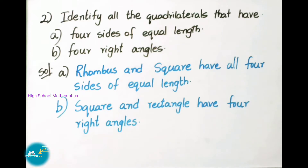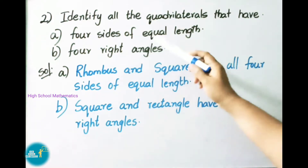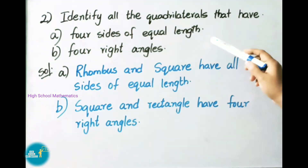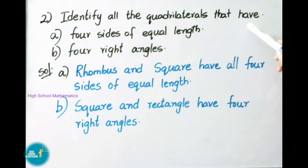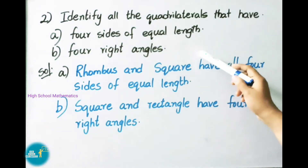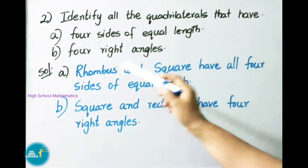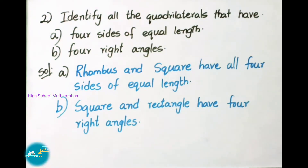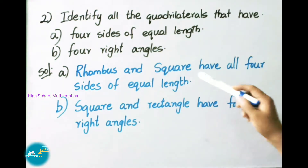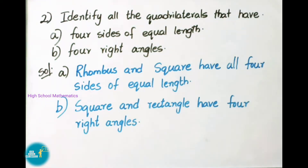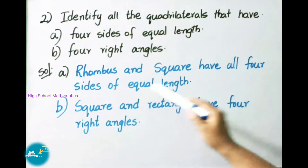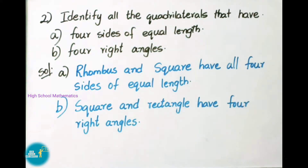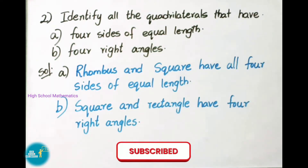Question number 2: Identify all the quadrilaterals that have 4 sides of equal length, and 4 right angles. Question A: Rhombuses and squares are the quadrilaterals that have all 4 sides of equal length.